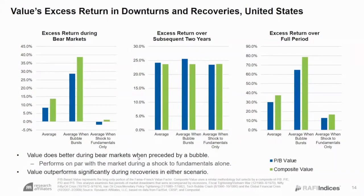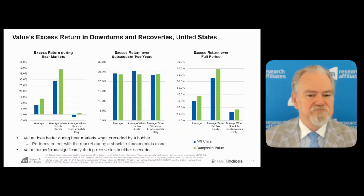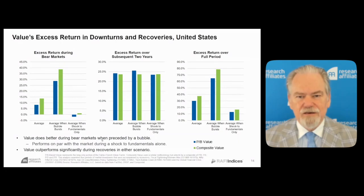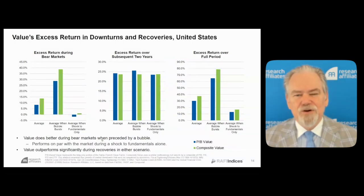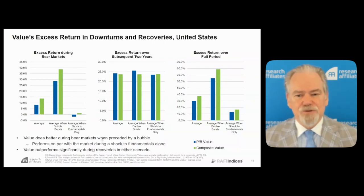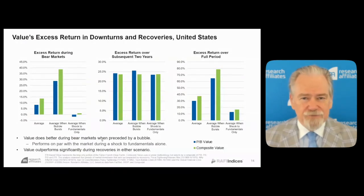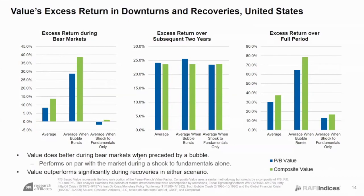When a bear market ends, people start looking to value and think: the dangers are receding, maybe we won't see a lot of these companies go bust. So they get priced back as going concerns instead of as a call option on future survival. Taking the bear market — typically one year — and the subsequent two years, the excess return over that full span on average is 3,000 to 4,000 basis points. When a bubble bursts, it's 6,000 to 8,000 basis points; when it's a shock to fundamentals, it's ballpark 1,500 basis points.